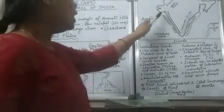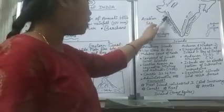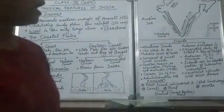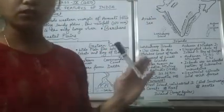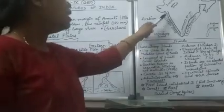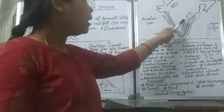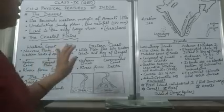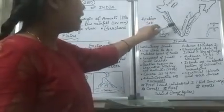Next we'll be talking about the coastal plains. In our country we find coastal plains which run along the peninsula region — the west coast runs along the Arabian Sea and the east coast runs along the Bay of Bengal. The western coast is situated between the Western Ghats and the Arabian Sea, and similarly the eastern coast is situated between the Eastern Ghats and the Bay of Bengal.